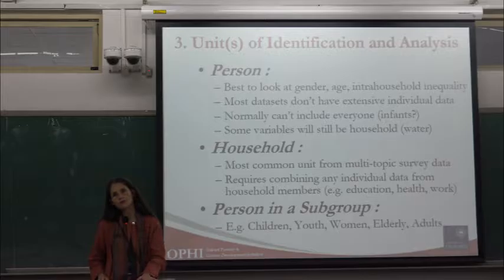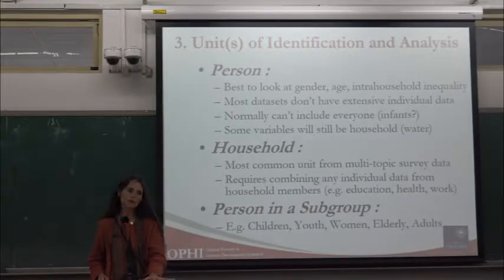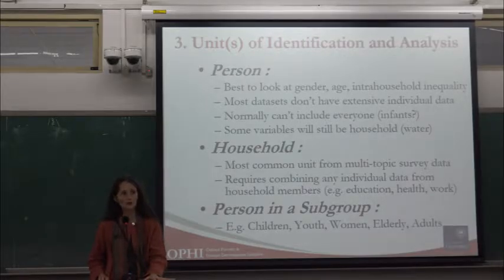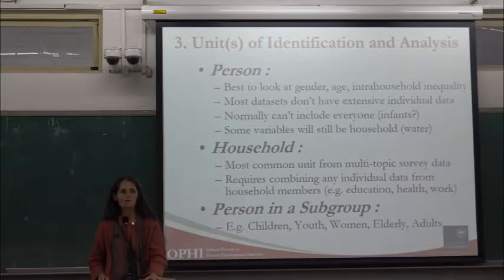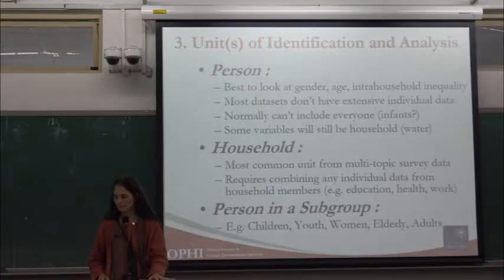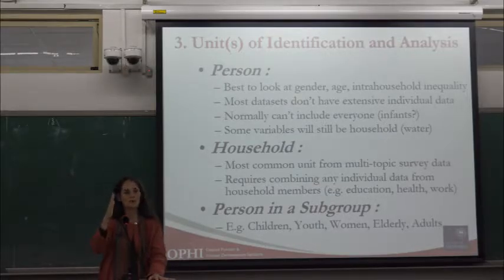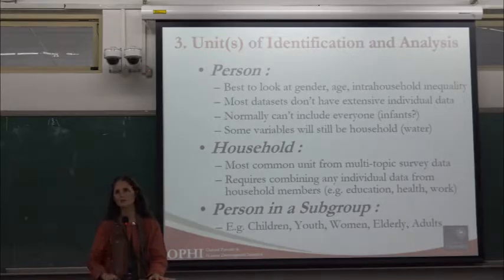Even if you use the person as the unit of identification, some variables will still come from the household level — water, sanitation, electricity, household assets, and often income — since surveys often do not have gendered or individual income. In that case, you give each person their household-level variable but still retain the person as the unit to identify who is poor.